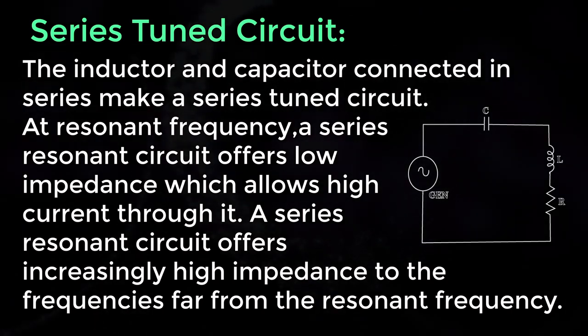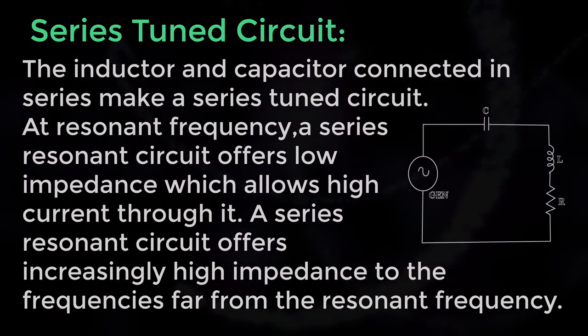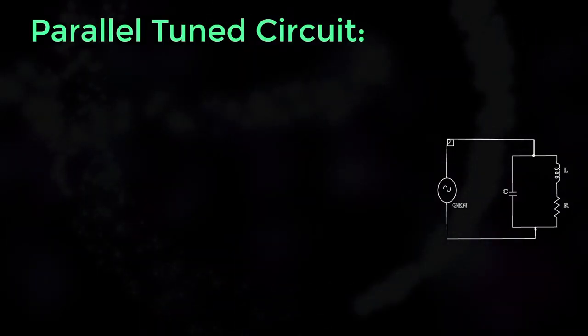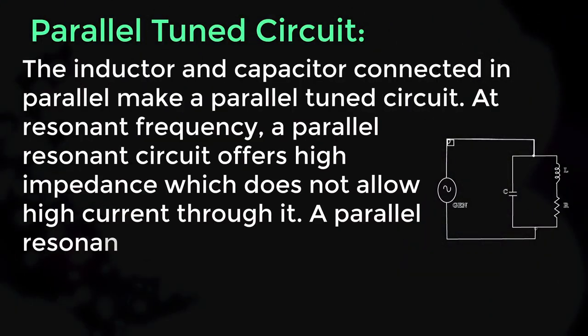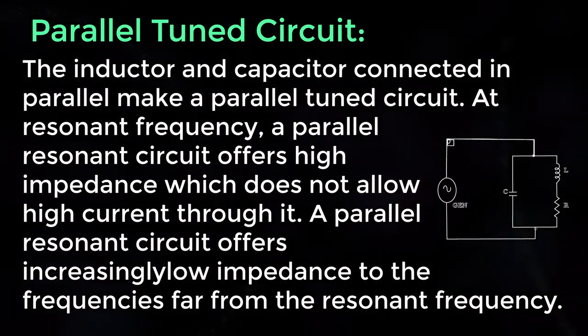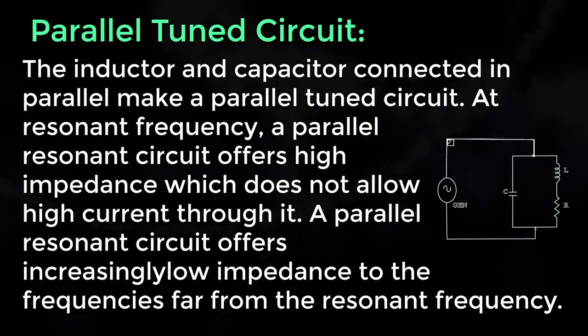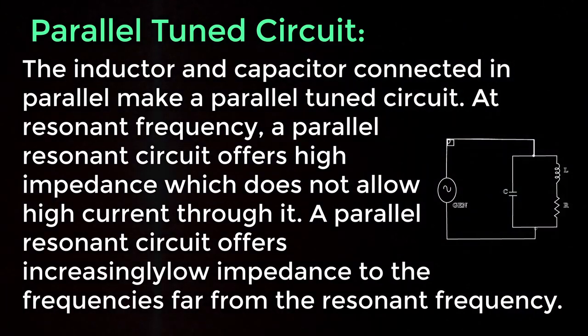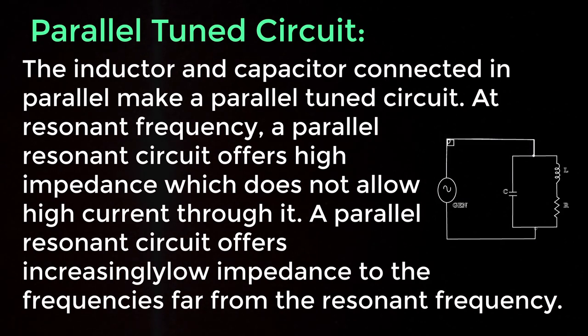Parallel tuned circuit: The inductor and capacitor connected in parallel make a parallel tuned circuit. At resonant frequency, a parallel resonant circuit offers high impedance which does not allow high current through it. A parallel resonant circuit offers increasingly low impedance to the frequencies far from the resonant frequency.